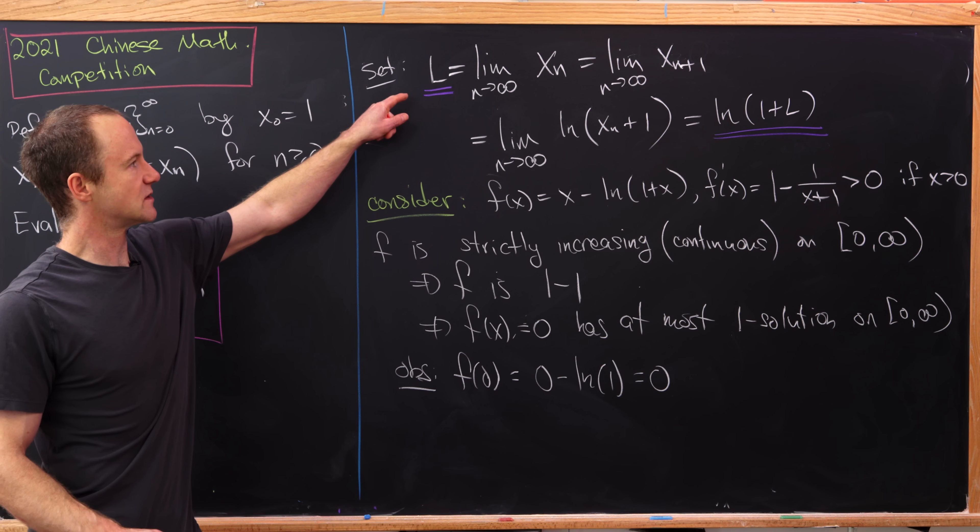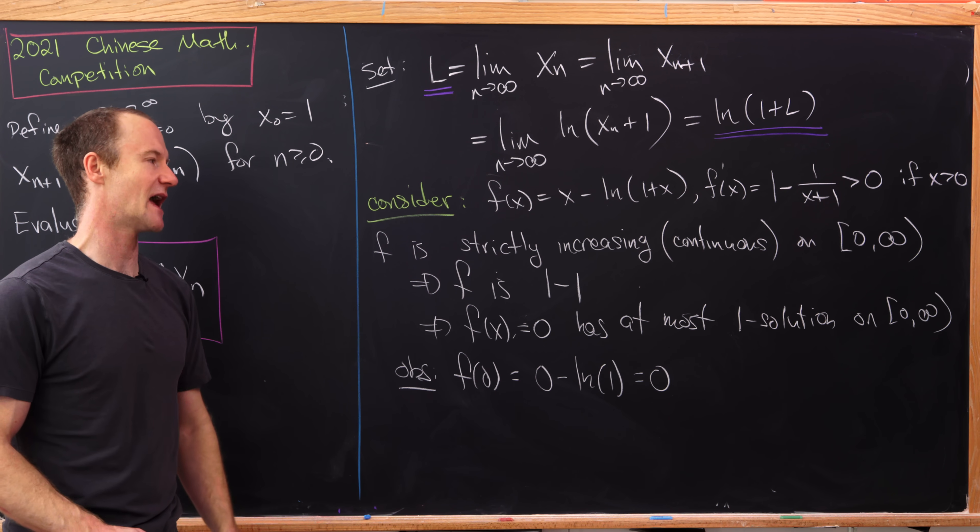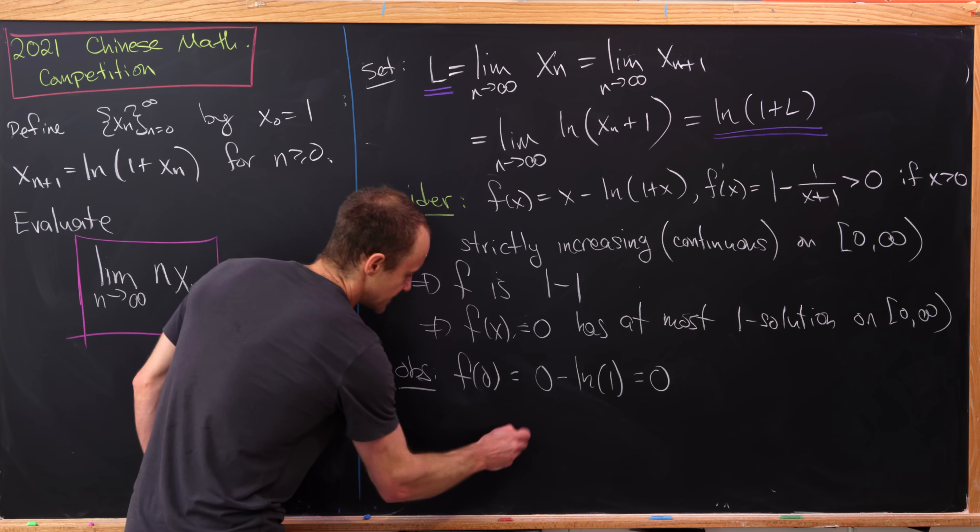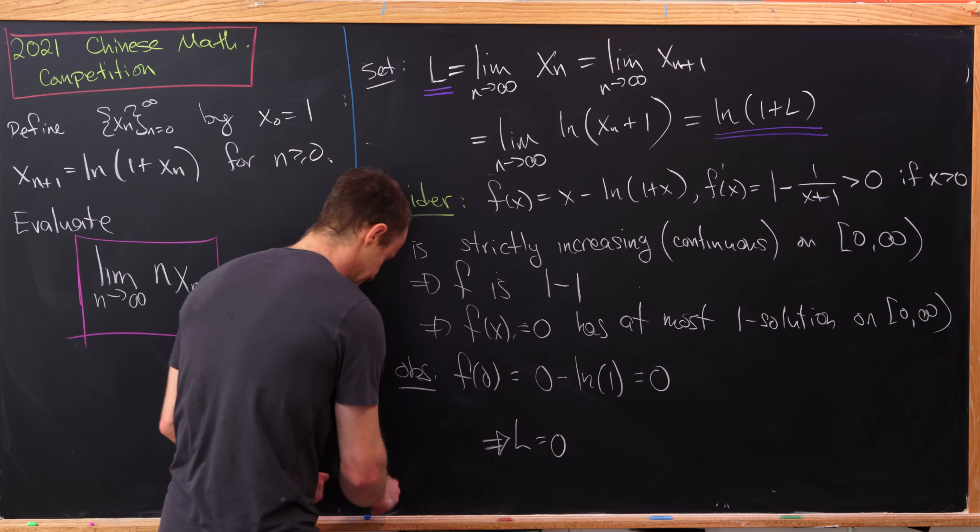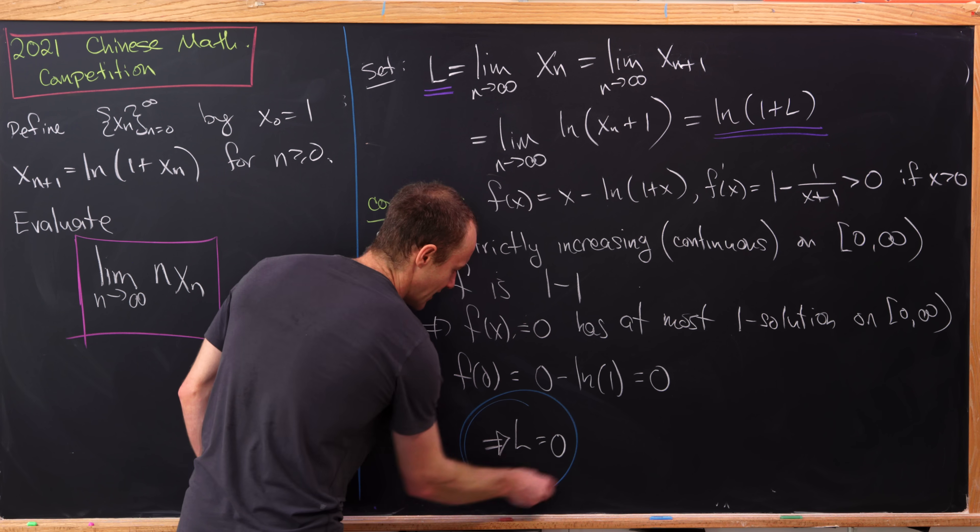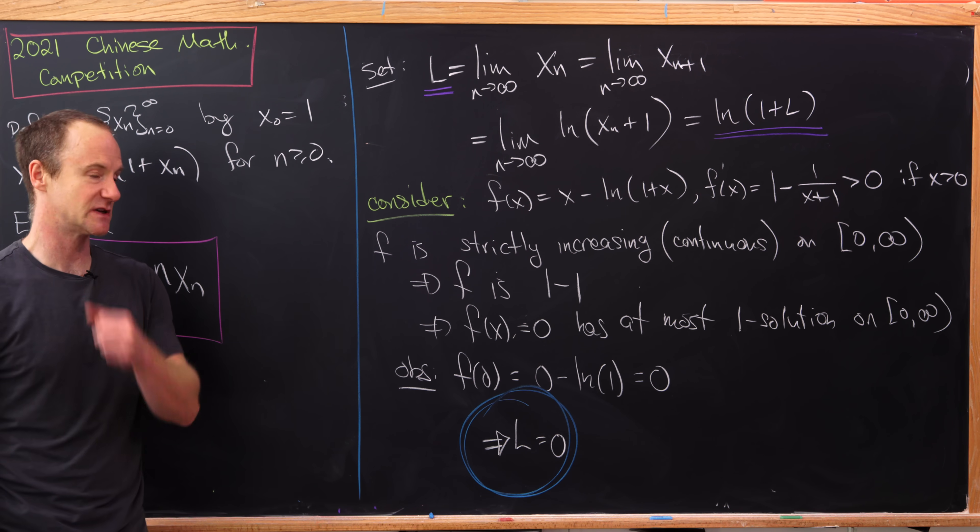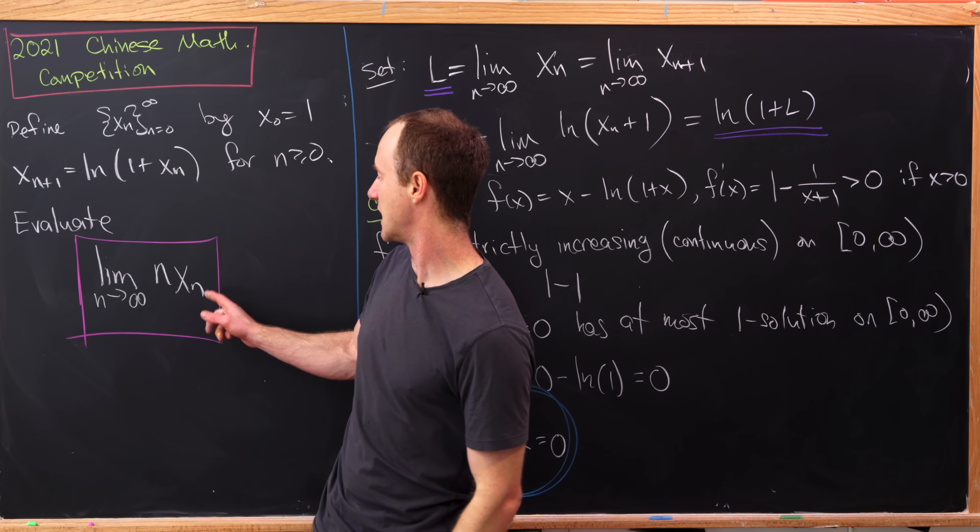But that's also a solution to the equation that I have underlined there in purple. But that means that our limit has to be 0. So we have L equals 0. So good, we know the limit of our recursively defined sequence. Now let's see how that can help us find the limit in question.